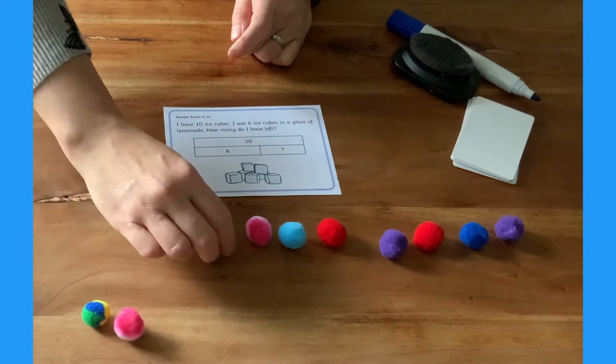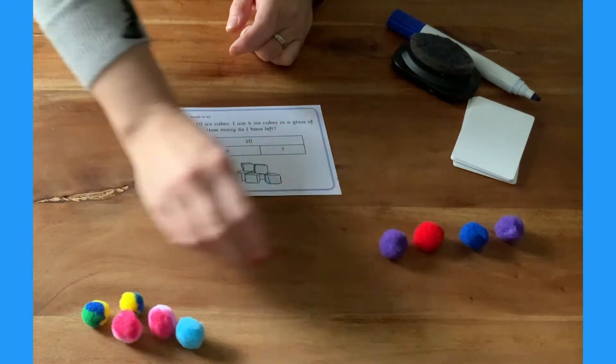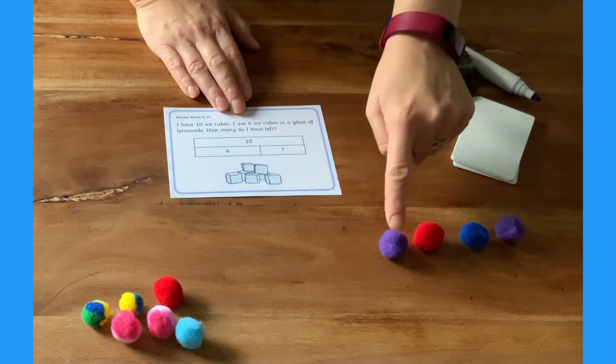Children can count out the 6 ice cubes or pom-poms from the original 10. Now they can count those remaining, 4.